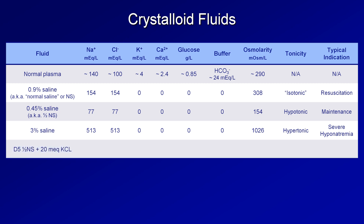Next is D5 half NS plus 20 of KCl. At least in the U.S., it's a very commonly used fluid. It contains 77 mEq/L of sodium, 97 mEq/L of chloride, 20 mEq/L of potassium, and 50 g per liter of glucose — notice the huge difference in glucose concentration between this fluid and plasma. There is no calcium or buffer. The predicted osmolarity is about 446 mOsm per liter, from which you would guess this is a hypertonic fluid. However, since the glucose is very rapidly taken up by cells, the effect on the body is actually that of a hypotonic fluid, and like plain half-normal saline, it is used solely as a maintenance fluid.